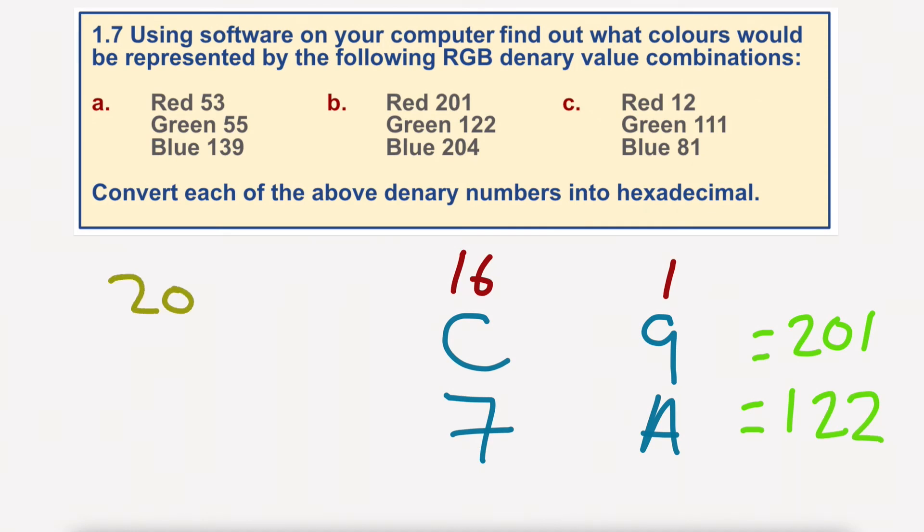We have a value of 204. So 16s into 204. So we take that away from that. We've got C again. And then 192, 8, 9, 10, 11, 12 again. So it would be CC equals 204.